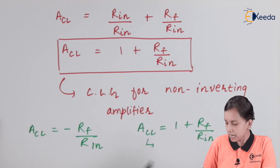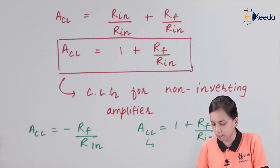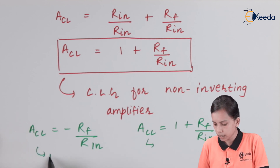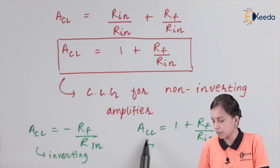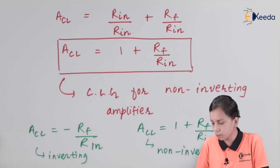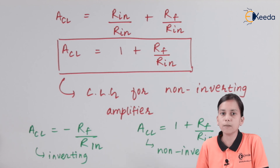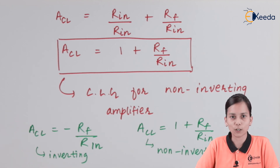So ACL equals 1 plus R_F divided by R_input. To summarize both gains: for the inverting amplifier, ACL equals minus R_F divided by R_input — the minus sign stands for the negative terminal. For the non-inverting amplifier, ACL equals 1 plus R_F divided by R_input — positive because input is applied at the non-inverting terminal. Thank you for watching. Stay tuned with Ekeeda and subscribe to Ekeeda.